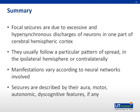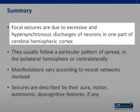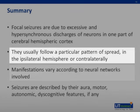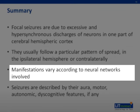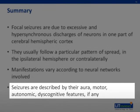In summary, focal seizures are due to excessive and abnormally synchronous discharges of neurons in one part of the cerebral hemisphere. The onset and spread is usually similar between episodes. The manifestations vary according to the networks involved. Focal seizures should be described by their symptom manifestations.